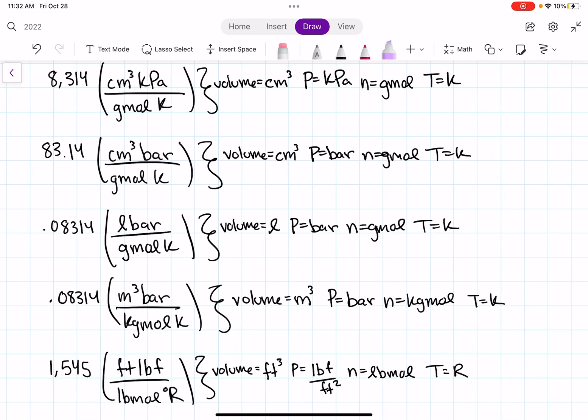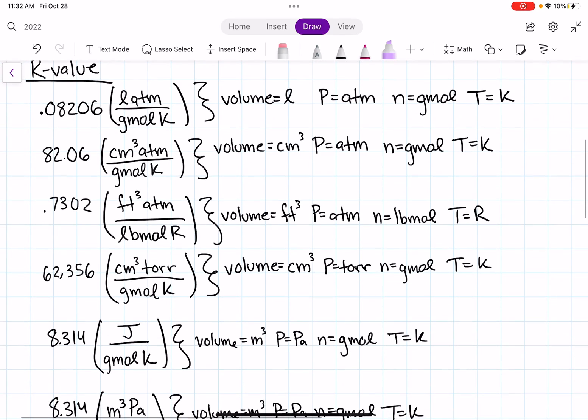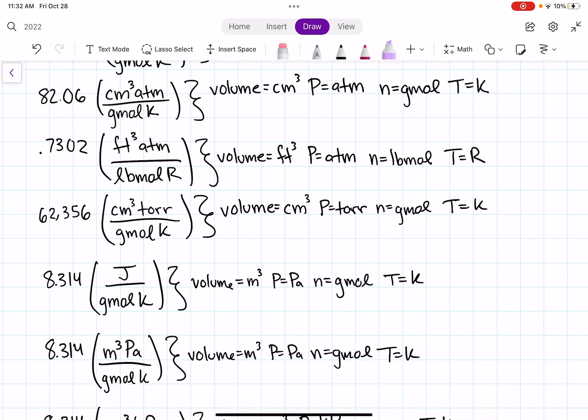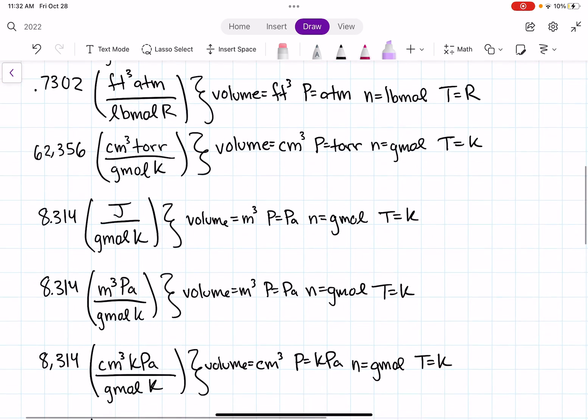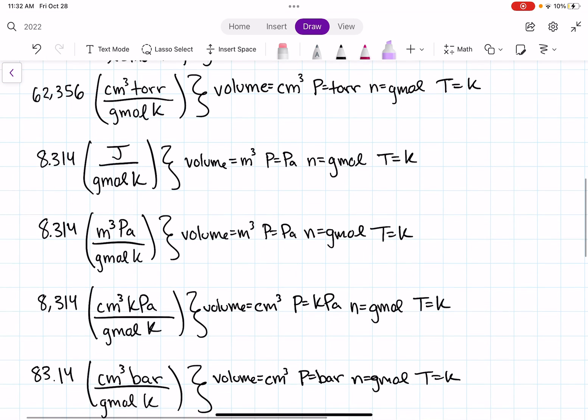So let's go ahead and look at our gas constant table and find an R value that matches our givens. So we have volume in liters, volume in centimeters cubed, but pressure is in atmospheres. The volume in this one is V cubed. This one has centimeters cubed, but pressure is in TORs, so we definitely don't want that one.